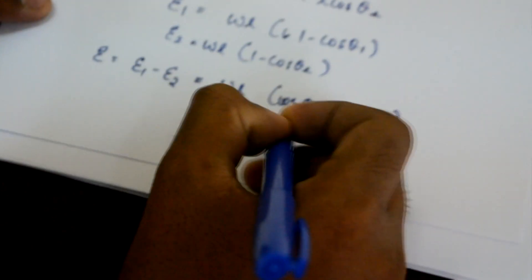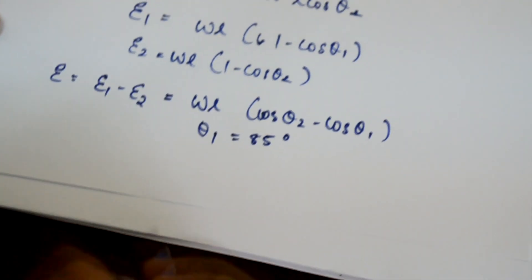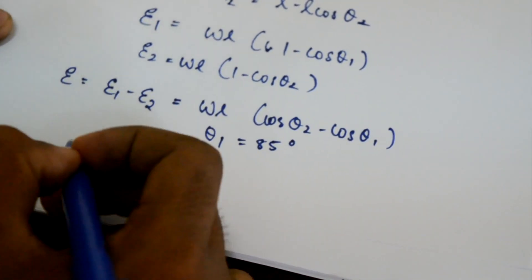For Izod, we know that θ1 is equal to 85 degrees and the maximum energy that can be absorbed by the specimen is 164 joules.